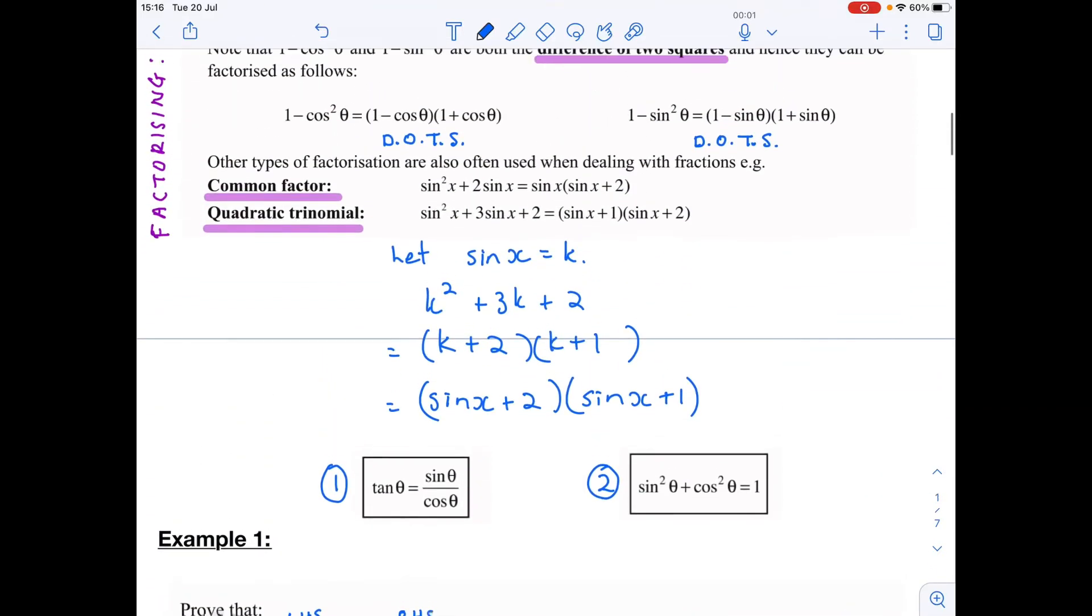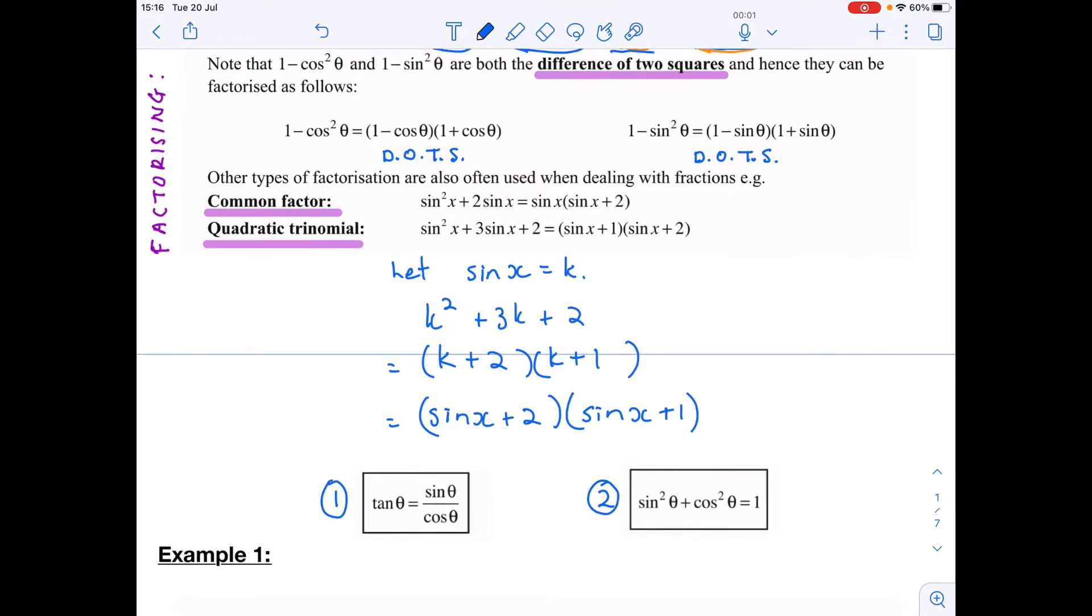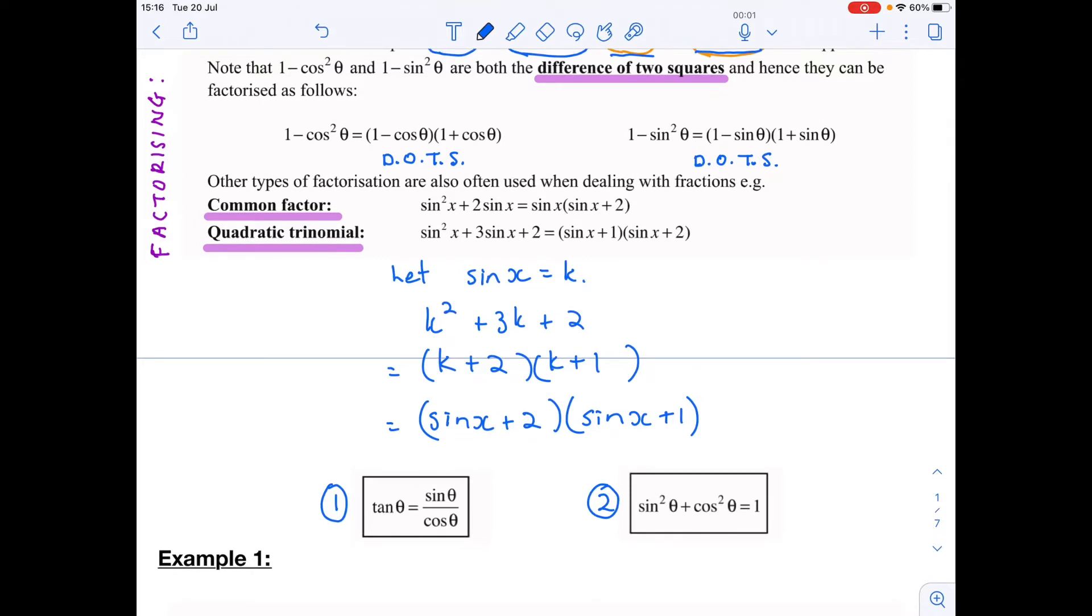Now we're going to continue with 2b today and do a few more. But I first want to take us back to this section. With identities and trig we can also do factorizing, and all the factorizing knowledge we've used in previous years we need to keep with us. There's difference of two squares, and there's also common factor.